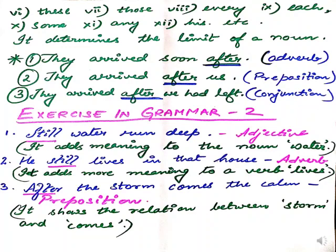Number 3 — 'After the storm comes the calm.' After the storm everything is calm. So 'after' is linking two things — storm and comes. Even though it is not in between, it is acting as a preposition. It shows the relationship between storm and comes. So here 'after' is a preposition.